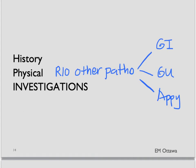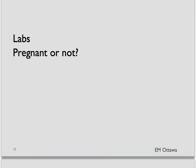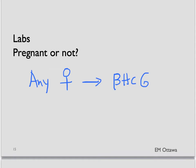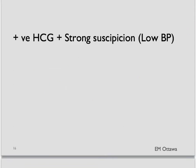Moving on to investigations — one of the first tests we need is whether the patient is pregnant. Any woman of childbearing age with abdominal pain, vaginal bleeding, or syncope needs to have a pregnancy test done. The fastest way is a urine beta-HCG test, which should be positive 8 to 10 days after conception, unless the urine is very diluted. If this is positive and we have a strong suspicion of ectopic pregnancy, particularly if she is hypotensive, we need to move her quickly into a monitored area and start resuscitation.